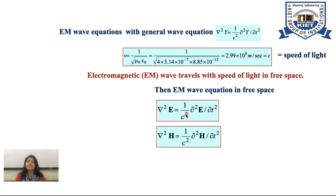The wave equations can be written as del squared E equals (1/c squared) del squared E over del t squared, and del squared H equals (1/c squared) del squared H over del t squared. Both are the electromagnetic wave equations in free space.